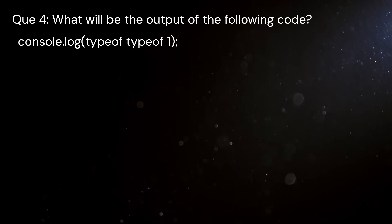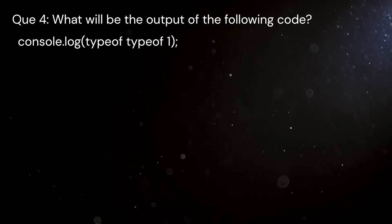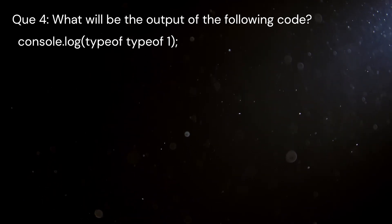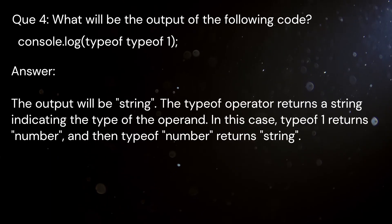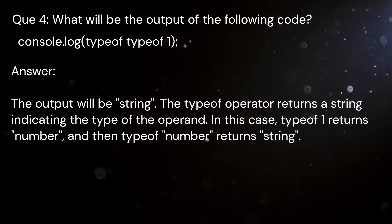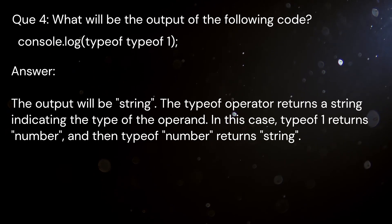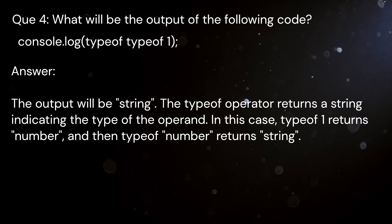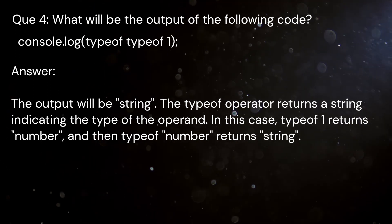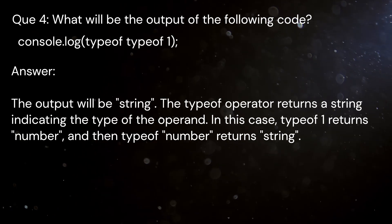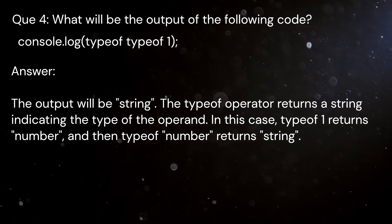Question 4: What will be the output of the following code? console.log(typeof typeof 1). Answer: The output will be 'string'. The typeof operator returns a string indicating the type of the operand. In this case, typeof 1 returns 'number', and then typeof 'number' returns 'string'.